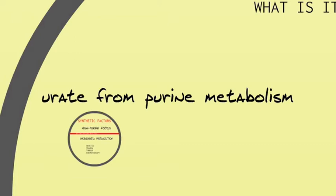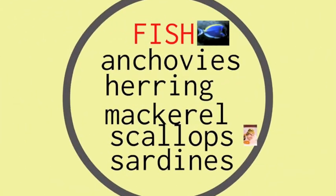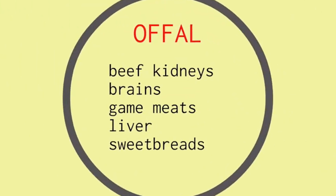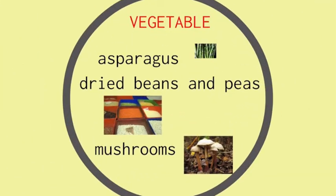There are some high purine foods worth knowing about, but they don't occur in any great quantity in most regular diets. These include fish such as anchovies, herring, mackerel, scallops and sardines; offals like beef kidneys, brain, game meats, liver and sweetbreads; and vegetables such as asparagus, dried beans and peas, and mushrooms.